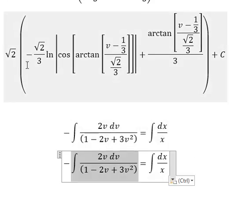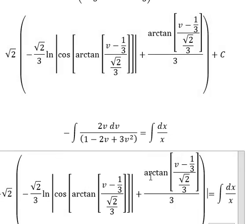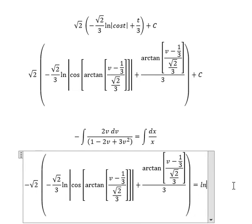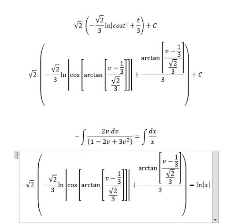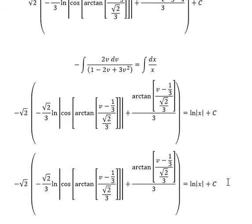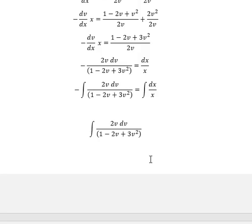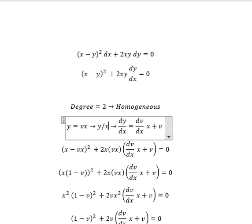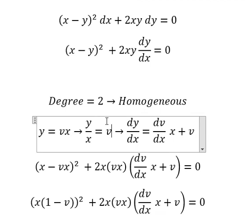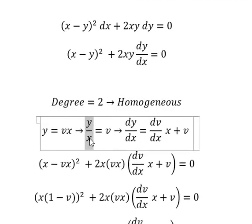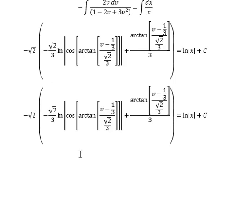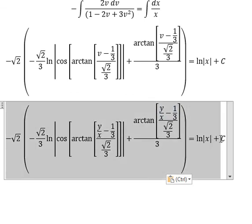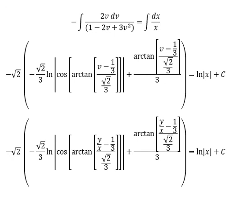Now going back — the integration of dx over x gives ln of the absolute value of x, and we put the constant C. About v: we need to divide both sides by x. Now we substitute v back as y over x, and this gives us the final answer. This is the end — thank you for watching.